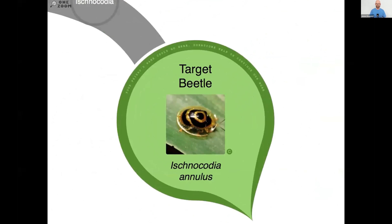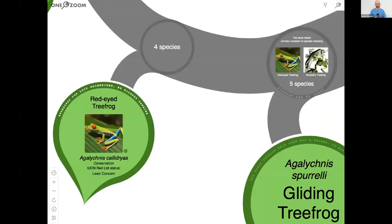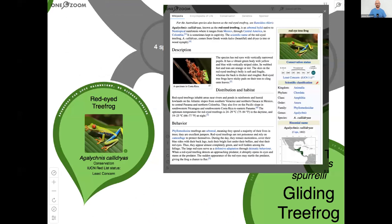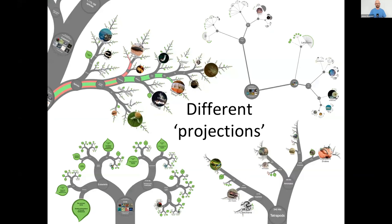And here we've arrived at our target — the target beetle — which enables me to tell you a bit more about what happens when you want to find out more about one of these leaves, one of these species. You can click on it and get a nice mashup showing Wikipedia, if that exists, and various other sources of further information. In case you're not so keen on this spiral view, there are many other different projections — different ways to view the same tree, still with a zooming user interface.